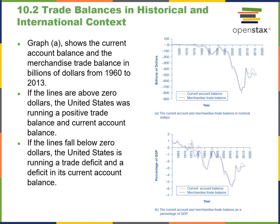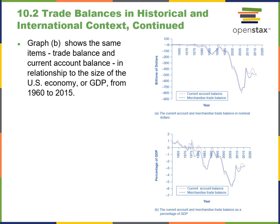Here we have a couple of graphs. Graph A shows the current account balance versus the total merchandise trade balance from 1960 to 2013. If the lines are above zero, the U.S. was running a positive trade and current account balance. If they fell below zero, we were running a deficit. Graph B shows the same items — trade balance and current account balance — in relationship to the size of the U.S. economy, or GDP, adding a comparative dimension.